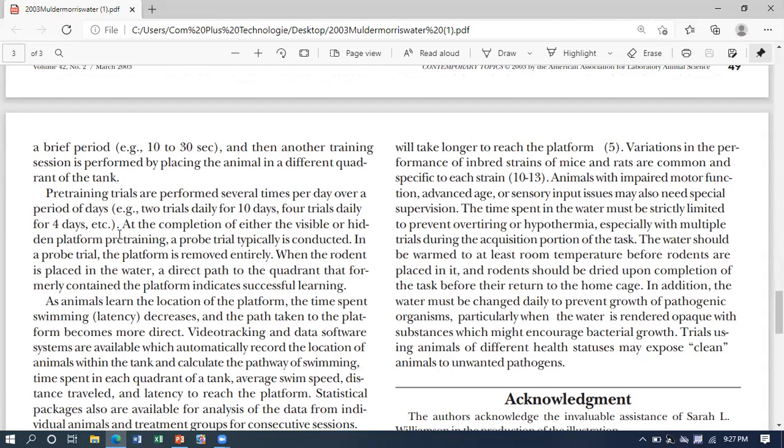After visible and hidden pre-trials, now a probe trial is conducted. We do a probe trial to check the memory - how much it has learned. In the probe trial, no platform is present. The rodent is placed in water and we check if it moves towards the same position where the platform was present. If yes, then it means that it has successfully learned. When the animal learns where the platform is, swimming time is also reduced and it will reach the platform quickly. The camera will record all these tasks.